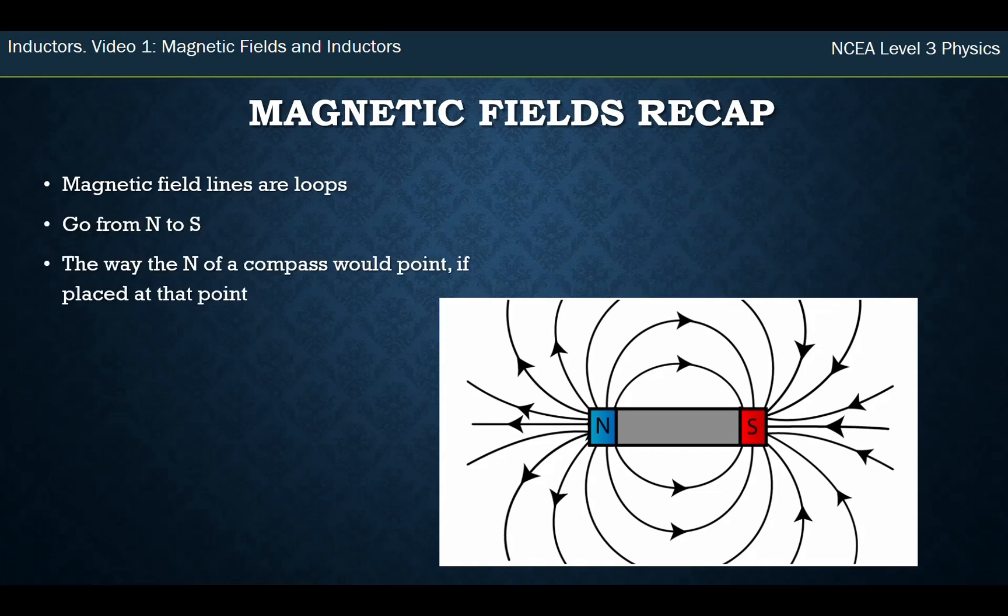If you're ever unsure of a magnetic field around something, if you took a little compass, where you place that, the direction the north arrow points was the arrow. So for example, I put a compass there, that's why that arrow goes in that direction, because that's the north of the arrow, it would be pointing that way towards the south pole of the other magnet, because opposites attract.